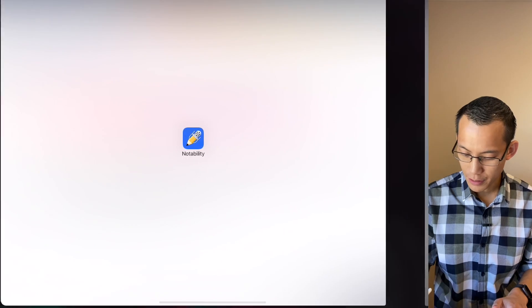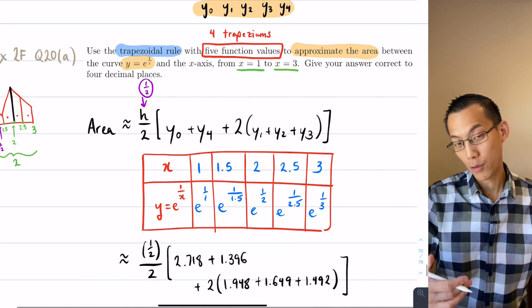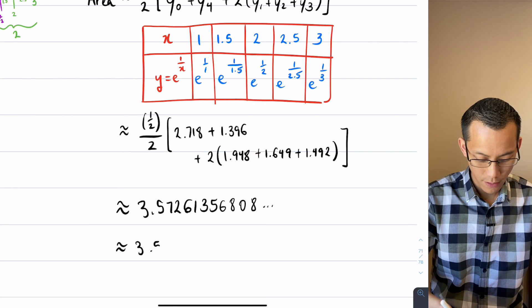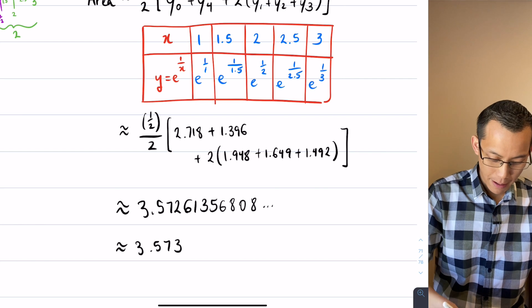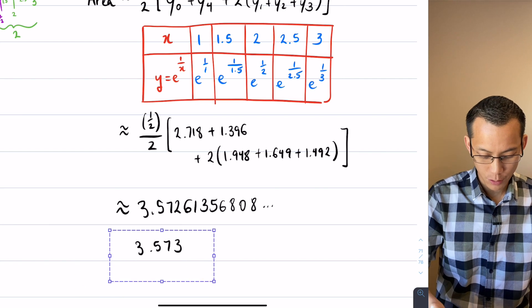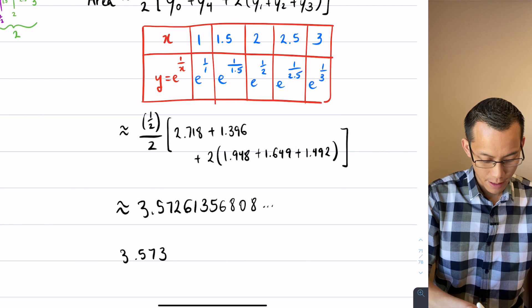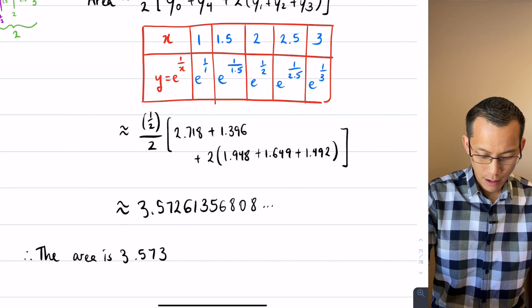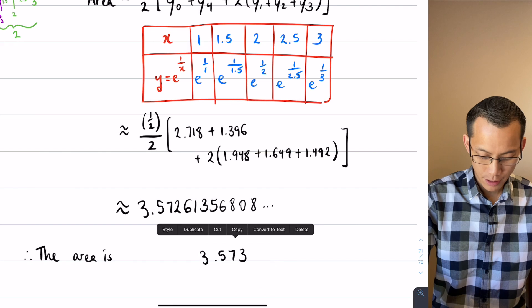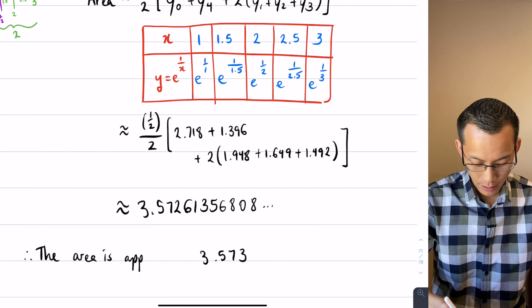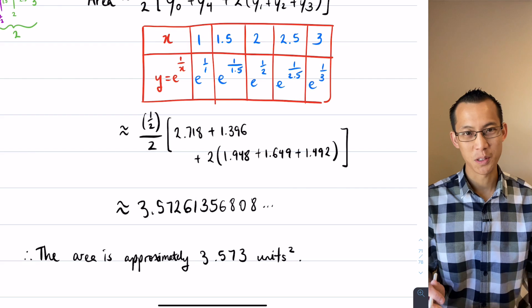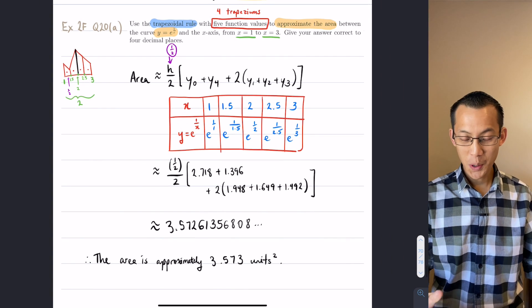So therefore I'm putting the exact value in and then when I go to the question, it says give your answer correct to four decimal places. Now I will actually do the rounding so I will say it's 3.573. In fact, I'll go one better than that. At this point I'm ready to conclude, remembering that I was trying to find an area. So I'm going to say therefore the area is approximately, and this is where I also include my units rather than in the process of doing the working above.